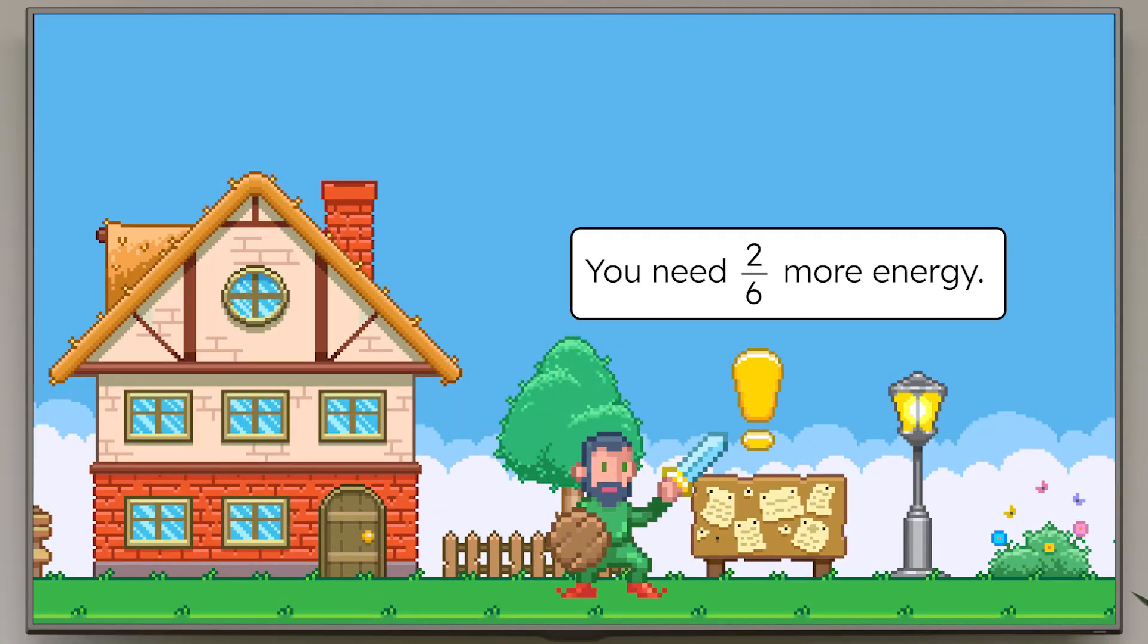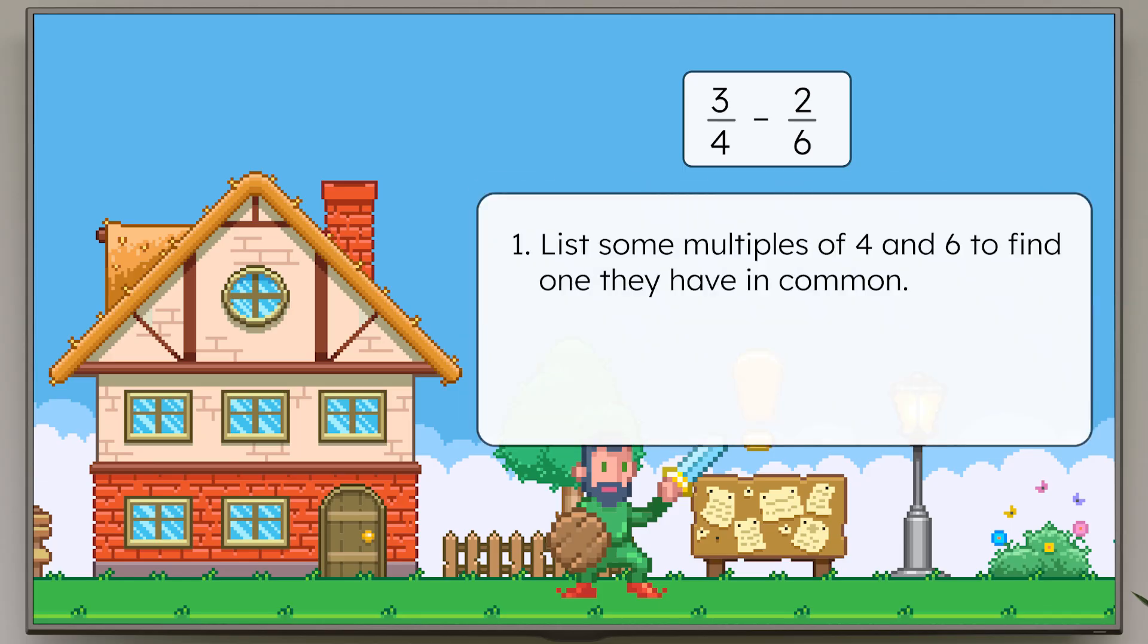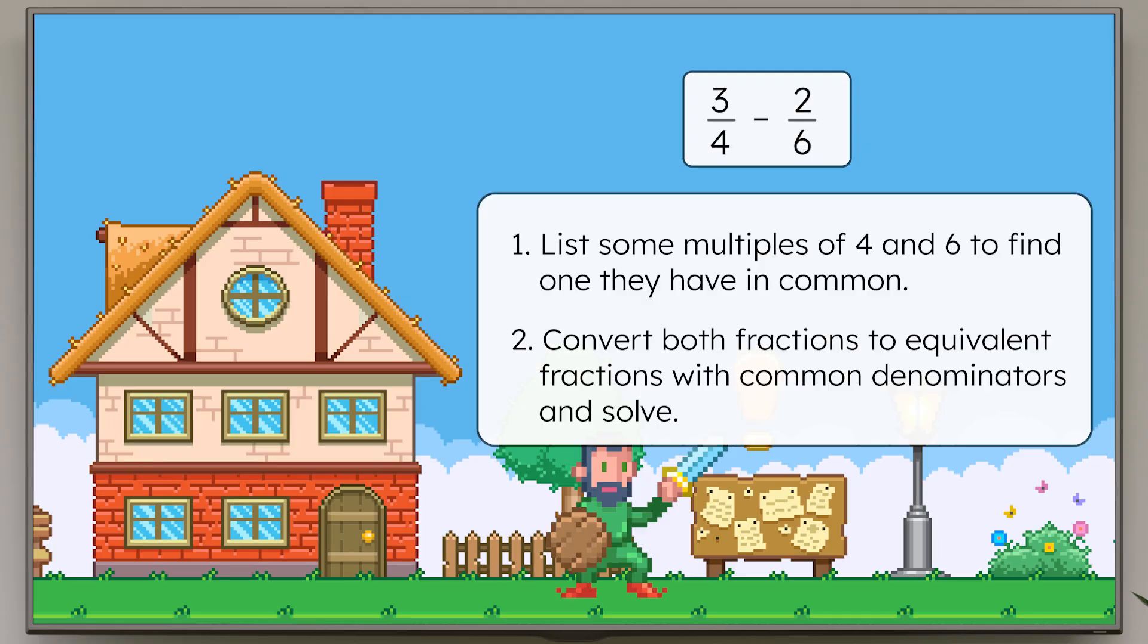Uh-oh. I don't have enough energy for this next challenge. I need two-sixths more. We have three-fourths in our inventory, so how much will be left after using two-sixths? We're going to need to find common denominators to figure this one out. First, list some multiples of four and six to find one they have in common. Then, convert both fractions to equivalent fractions with common denominators. Pause to try it on your own. We'll check it out together when you're done.